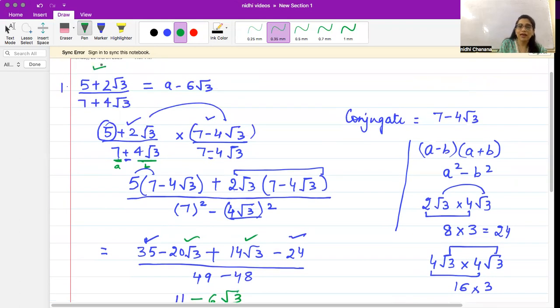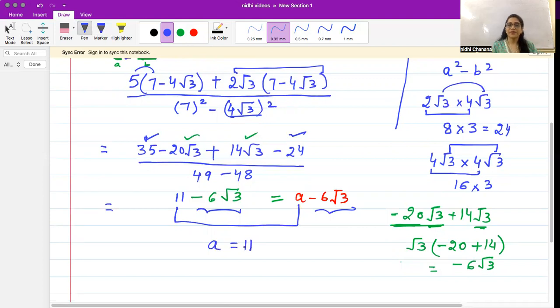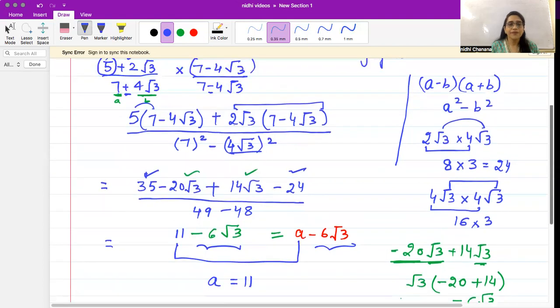Now in our question, first we had to solve this, and now you put it equal to a - 6√3 because we have to find the value of a. So a - 6√3 equals 11 - 6√3. In both cases minus 6√3 is the same, so what is a? a is 11. So the value of a is 11. I hope this is clear.